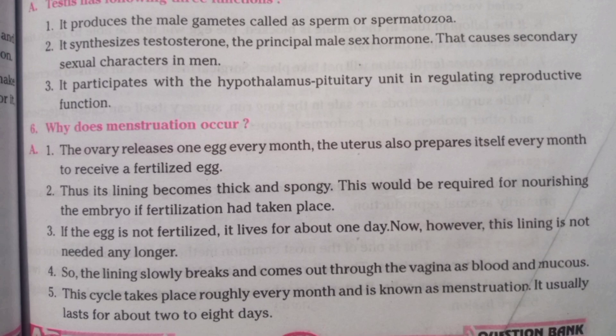If the egg is not fertilized, it lives for about one day. However, this lining is not needed any longer. So the lining slowly breaks and comes out through the vagina as blood and mucus. This cycle takes place roughly every month and is known as menstruation.